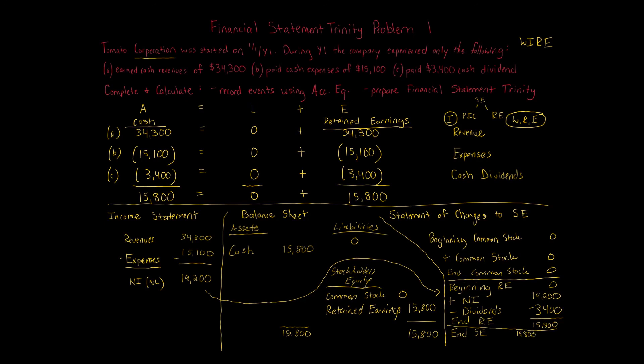Prepare these statements in order: income statement first, then the balance sheet and statement of changes to stockholders' equity. The income statement must come first because you bring that net income balance forward. If preparing a statement of cash flows, always do the balance sheet before it since the cash flow statement shows the change in the balance sheet's cash. This problem is meant to show the bare bones of financial statements and how things flow between them.